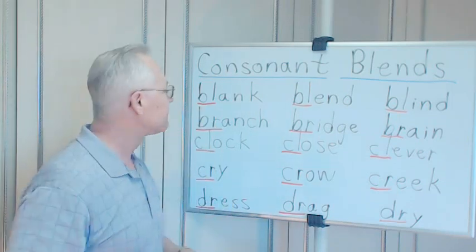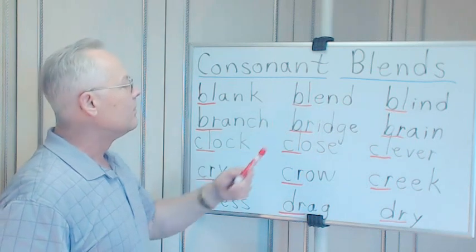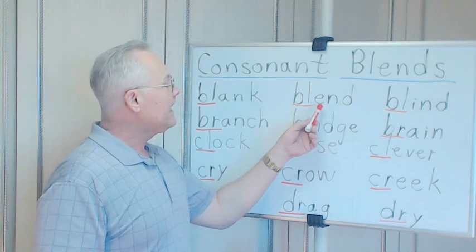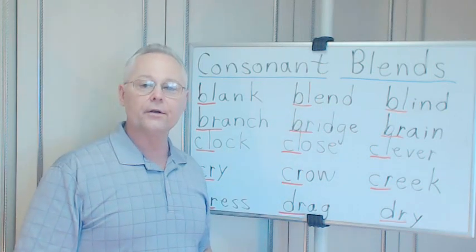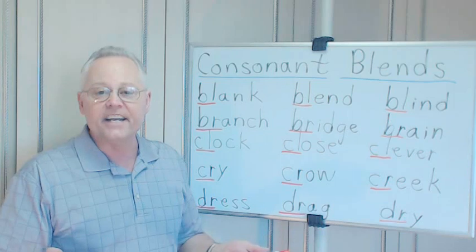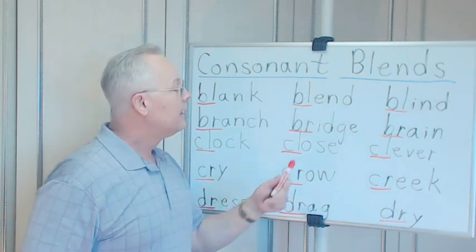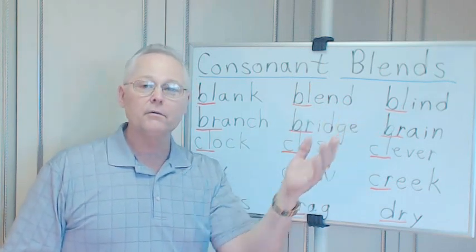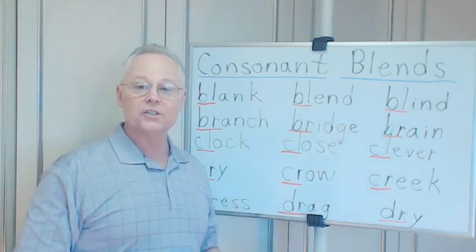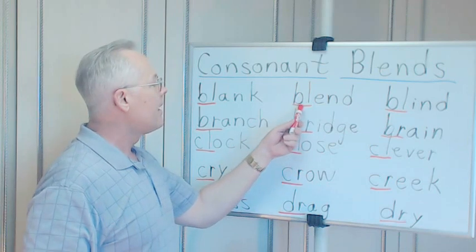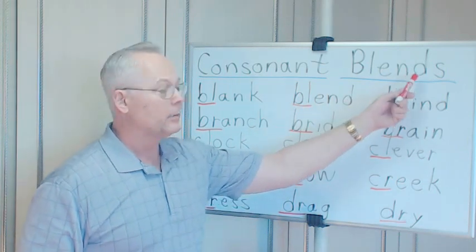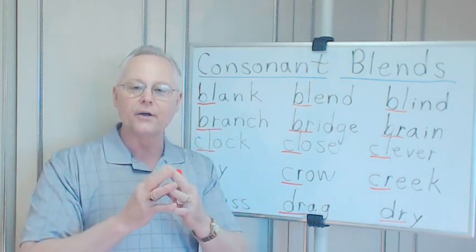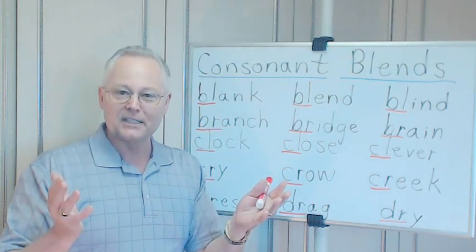Blend. BL 'blah', E-N-D. Now E-N together normally just sounds like 'en', the letter N, D 'duh', like the end of the road, the end of the video. Blend - you blend two things or more together to make something else, right? A blend of fine whiskey, a blend of tobaccos - different things put together.